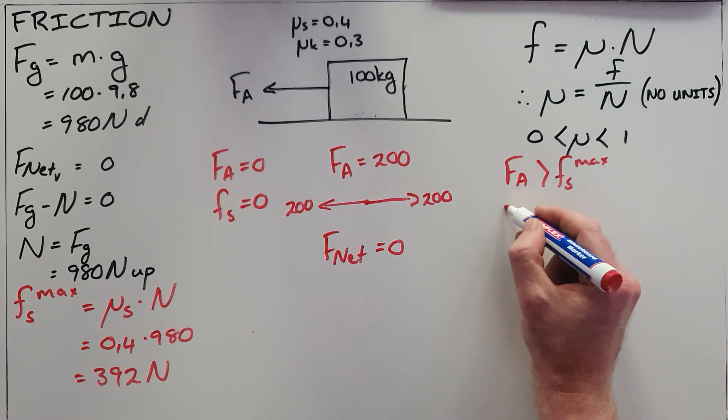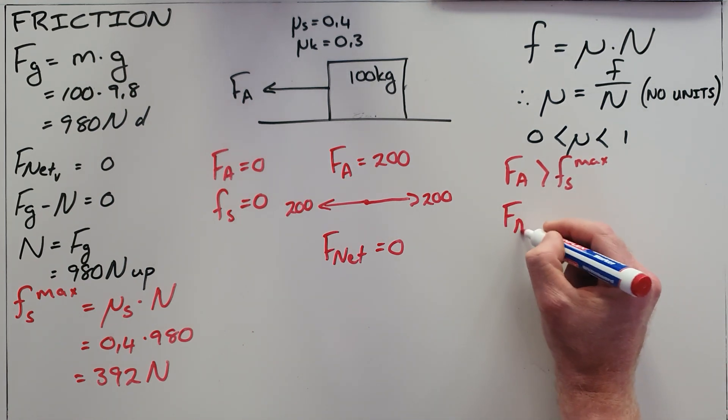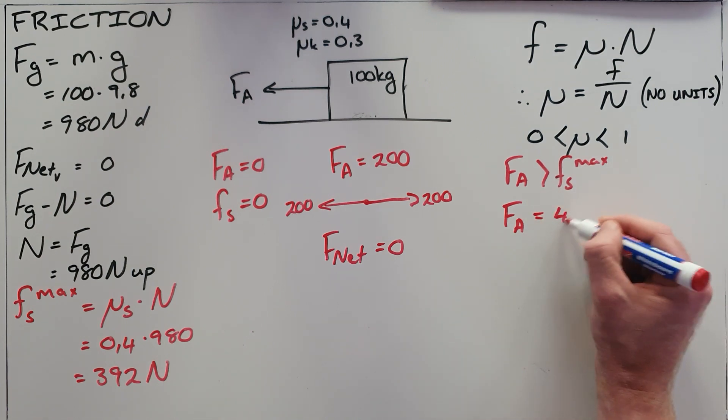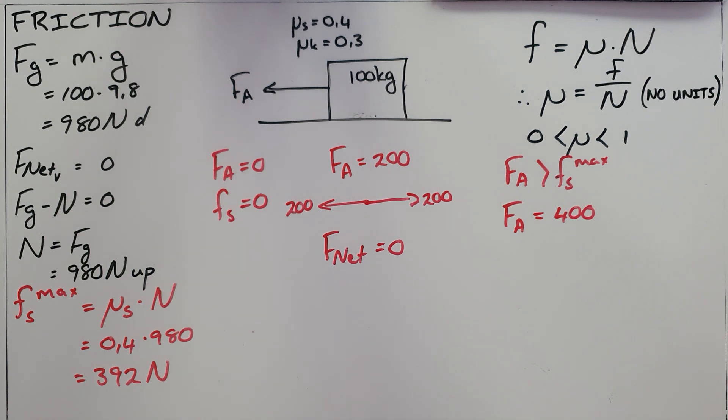Once the applied force has exceeded the static friction maximum, in this example I am using an applied force of 400 newtons, we can now say the object is in motion.